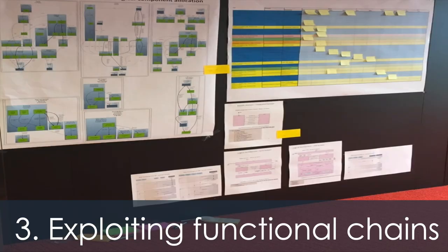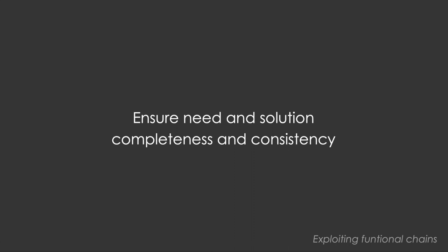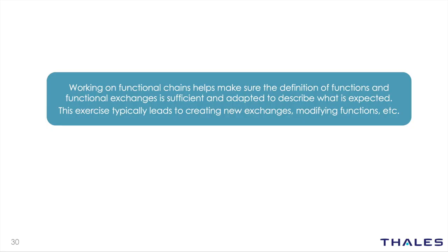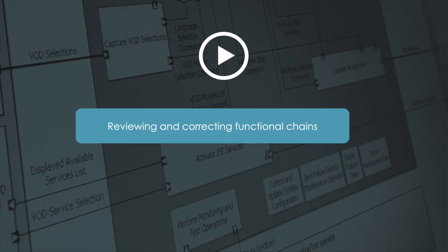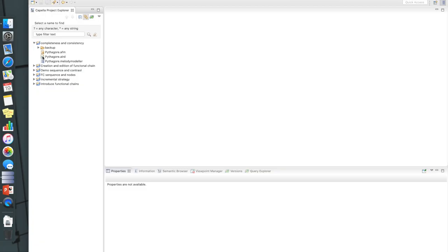We now reach the third part of this webinar — probably the most interesting one — about exploiting functional chains. The first exploitation is within one given model: using them to ensure need and solution completeness and consistency. Working on a functional chain helps make sure the definition of functions and functional exchanges is sufficient and adapted to describe what is expected. The correspondence of functional chains across Arcadia perspectives is a key asset, and functional chains are the contracts binding the different perspectives.